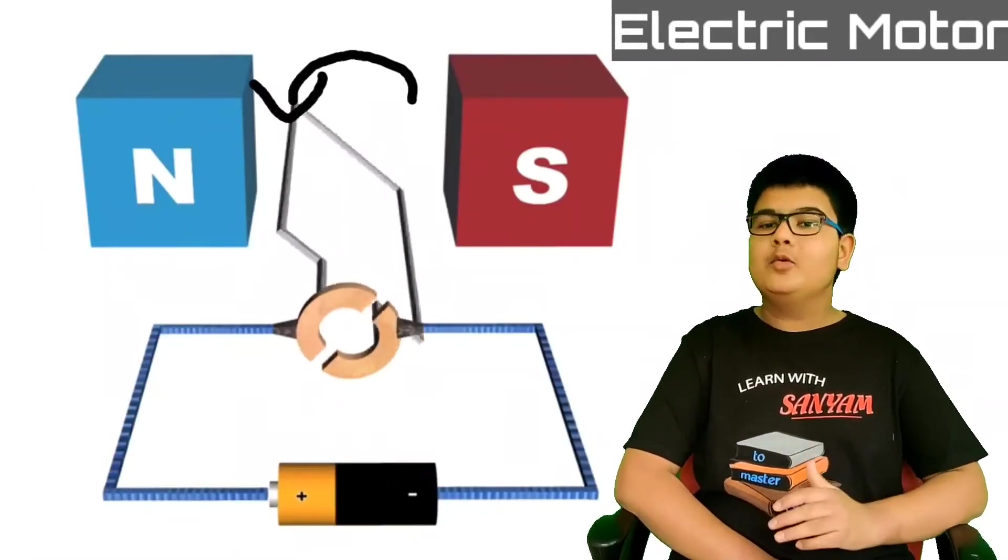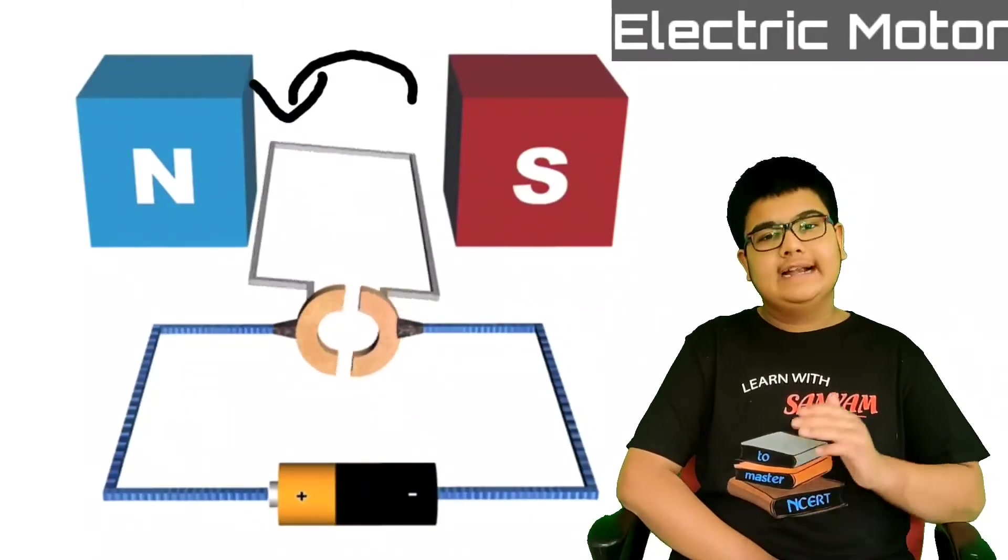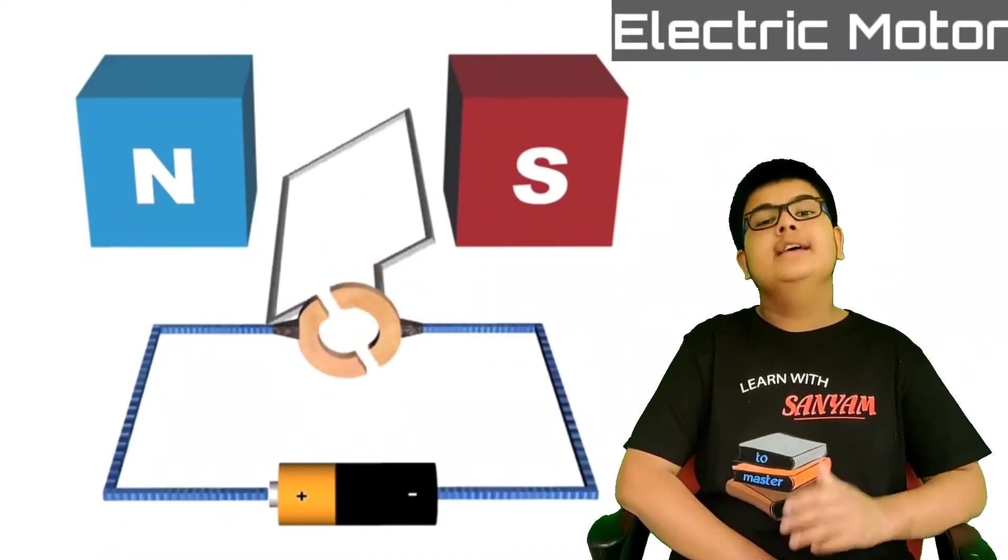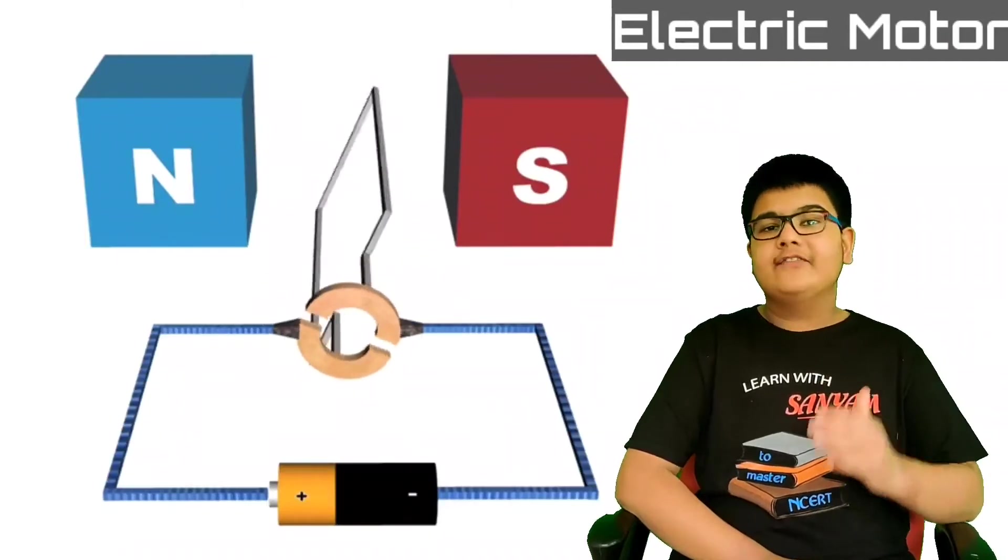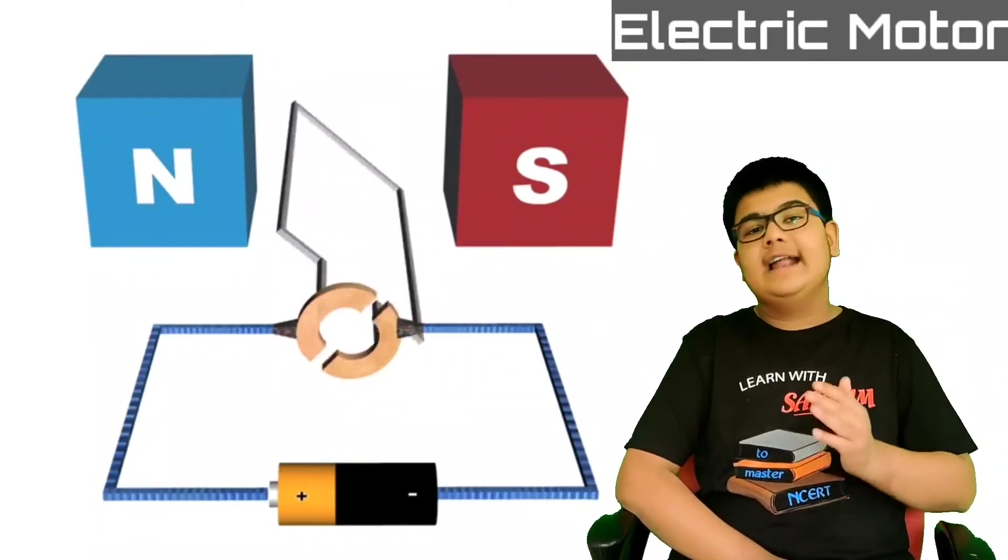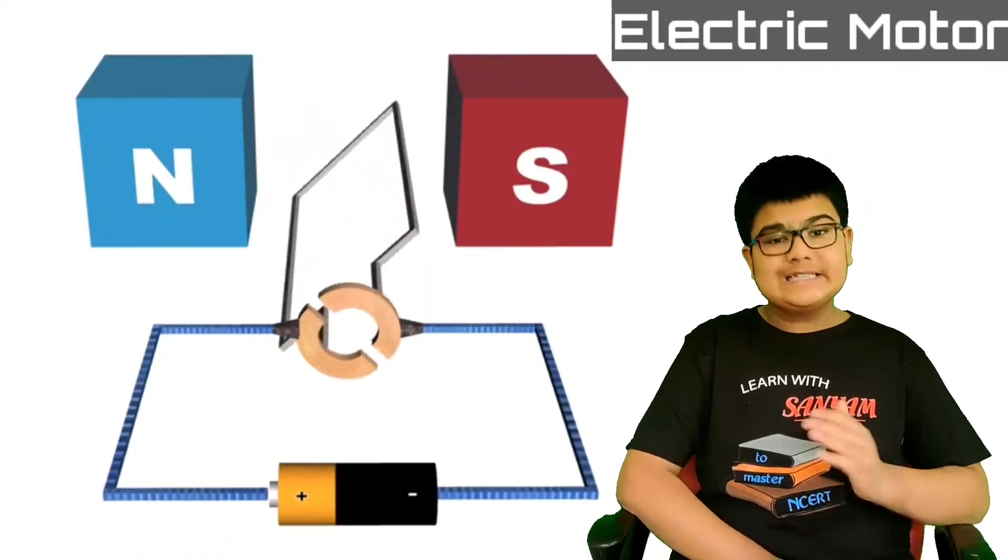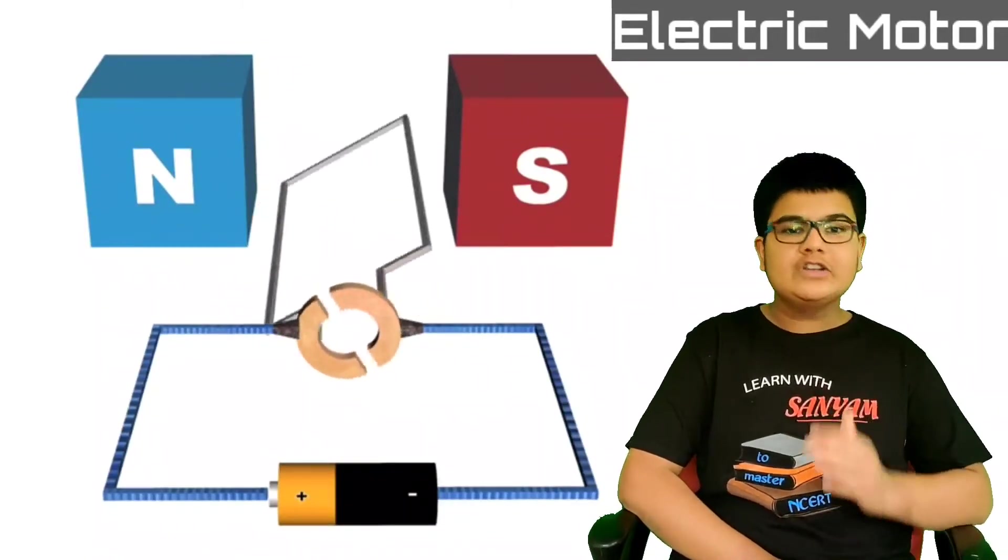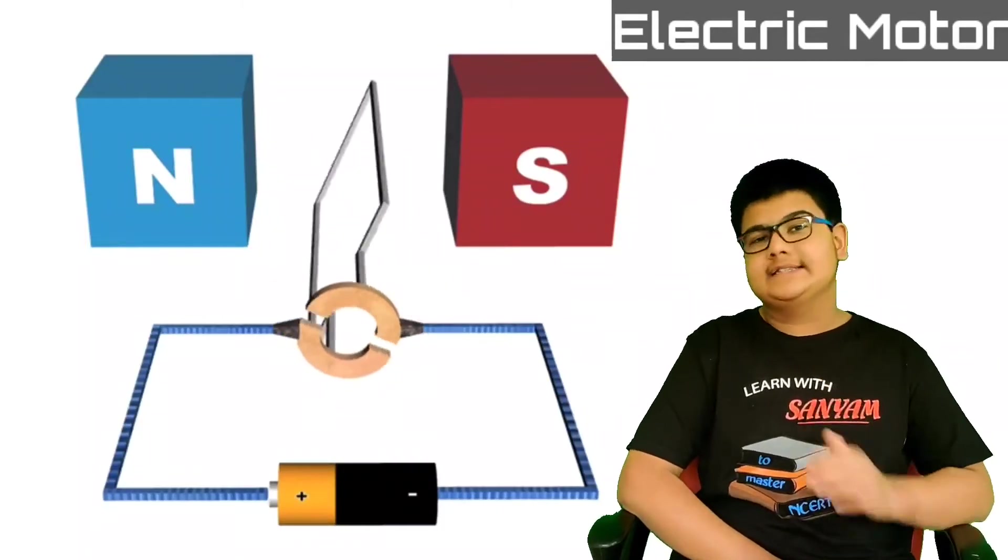Therefore, the coil and axle rotate half a turn more in the same direction, that is in the anti-clockwise direction. Now after two half turns in the anti-clockwise direction, we get a full turn in the anti-clockwise direction. This process is repeated giving rise to a continuous rotation of coil and axle.